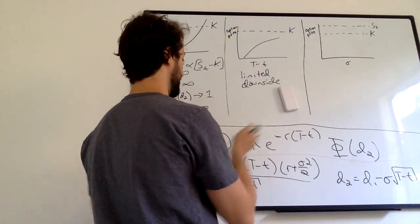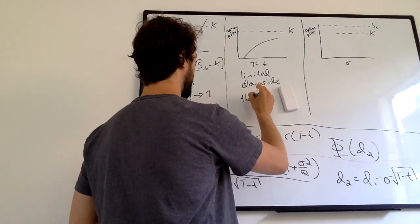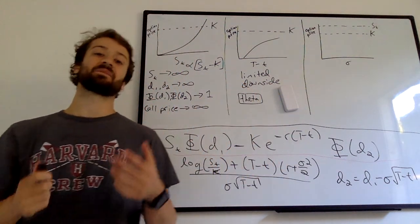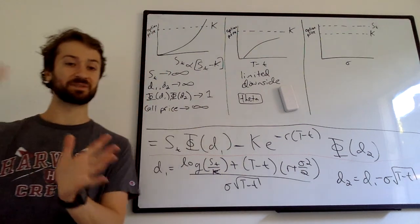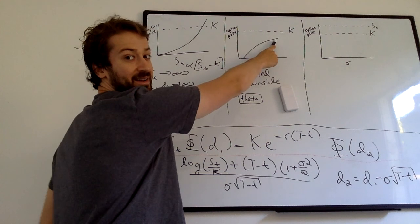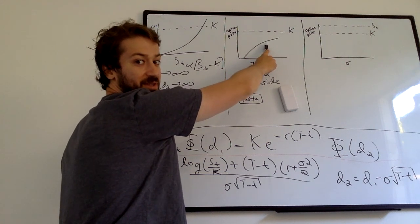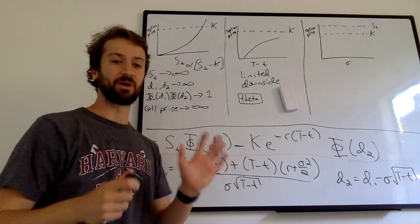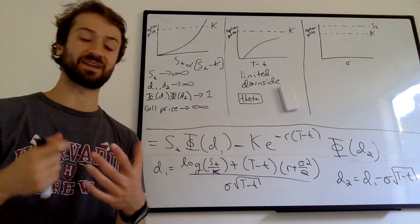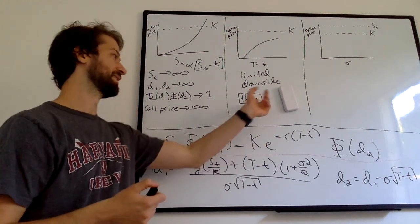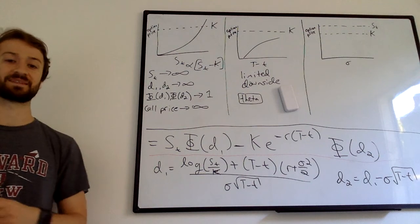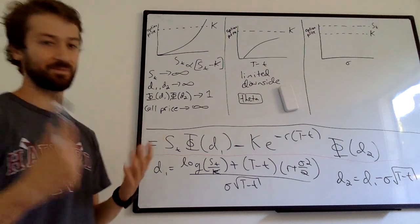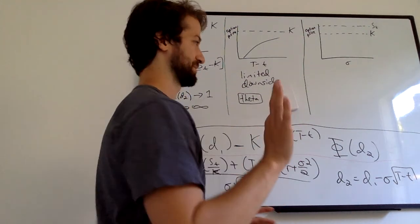One interesting thing to note: if you own an option, it's going to get less valuable the closer you get to expiry, because the only thing changing is the time until expiry. By doing nothing — all else equal — the less time until expiry, the less your option is worth. So your option value is going to decay over time. That's something we call theta in finance. The longer you hold on to your option, the less time there is, so the value decays — which is a bummer unless you're short the option.